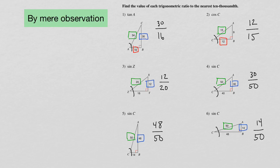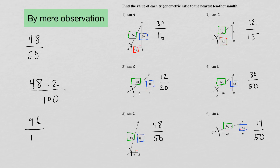Number five, sine of C, we have 48 over 50. Once again using our formula by mirror observation: 48 times 2 over 100, that's 96 over 100, which equals 0.96. Our answer is 0.96 for number five.